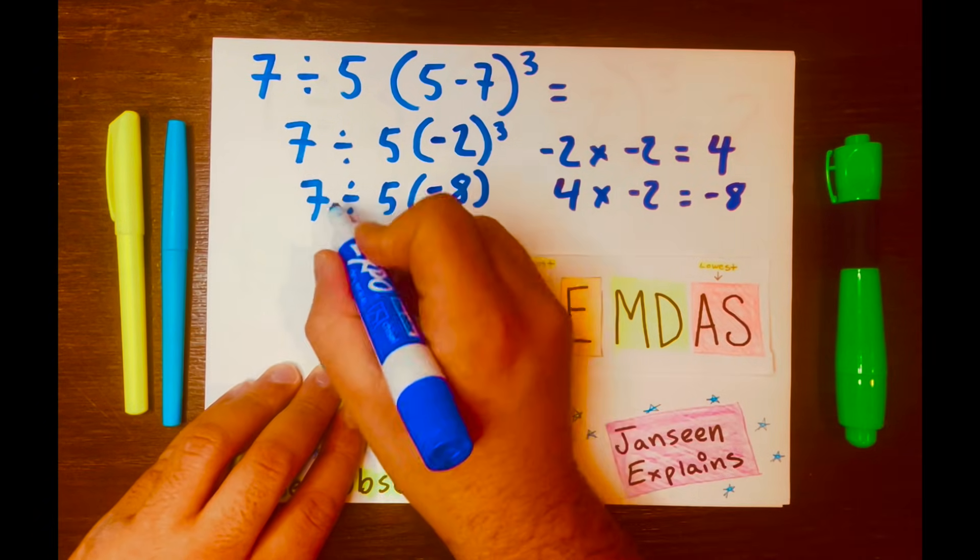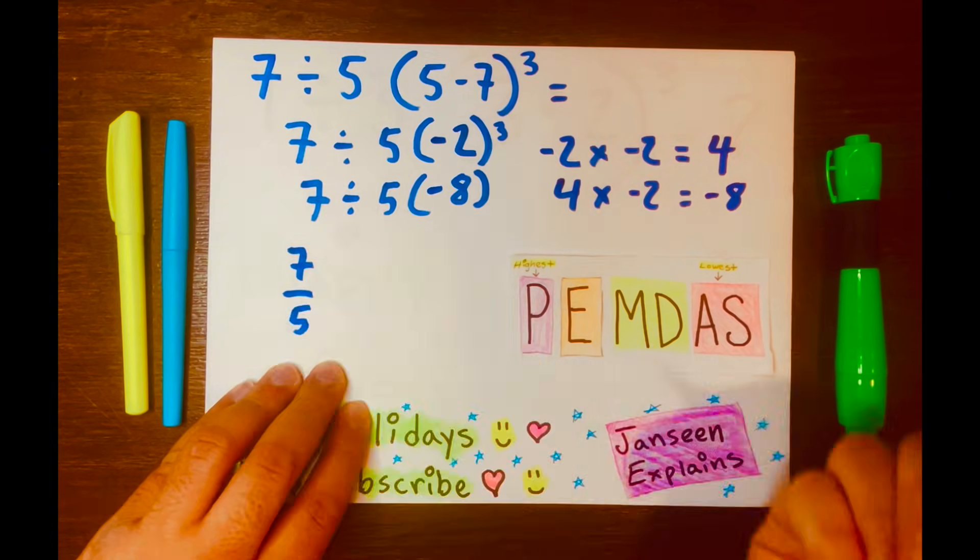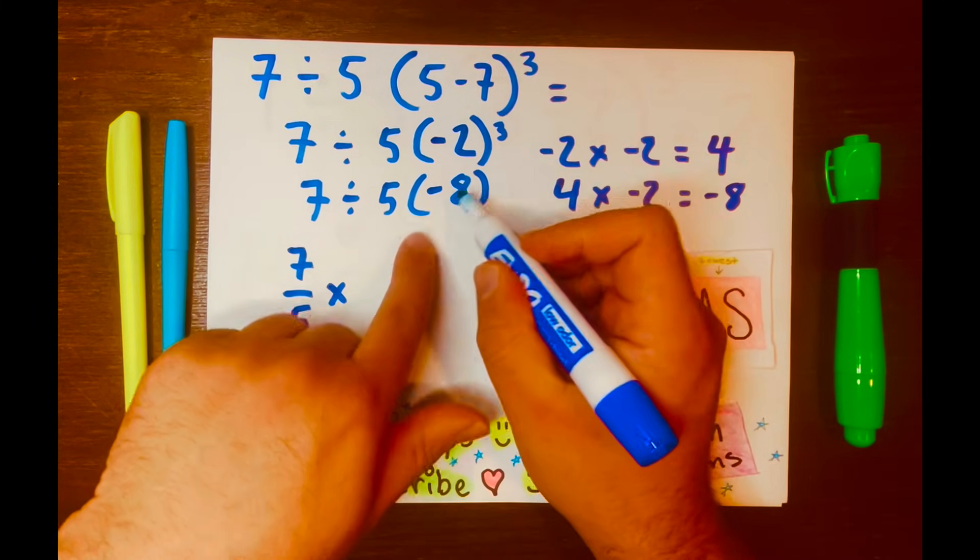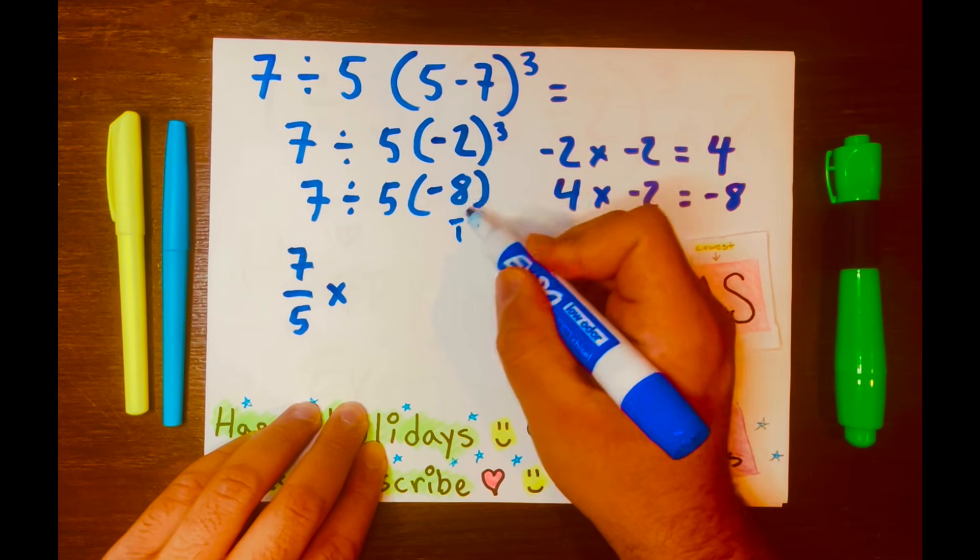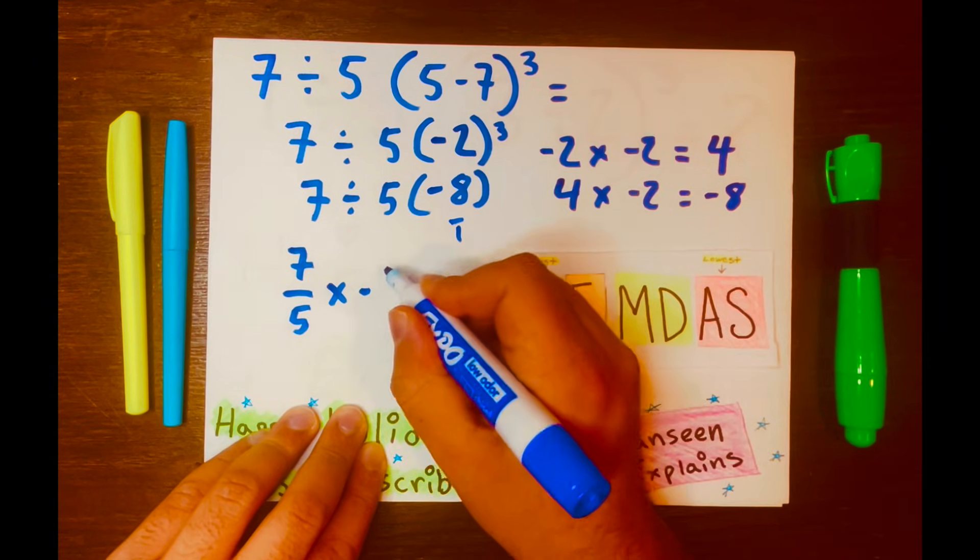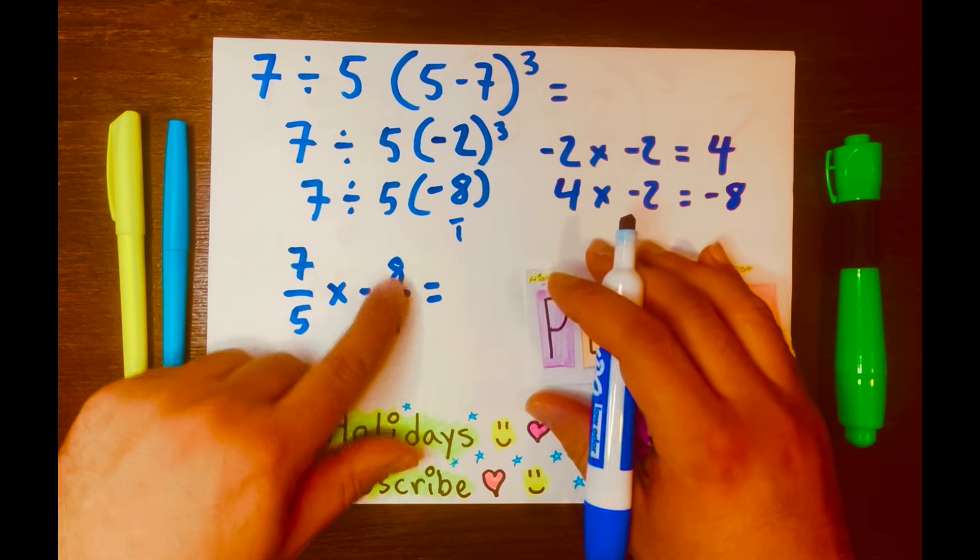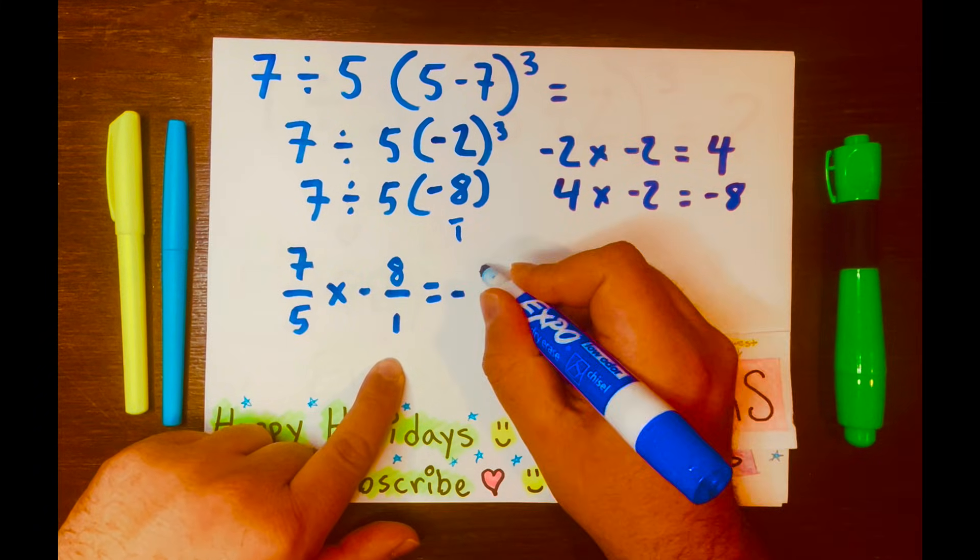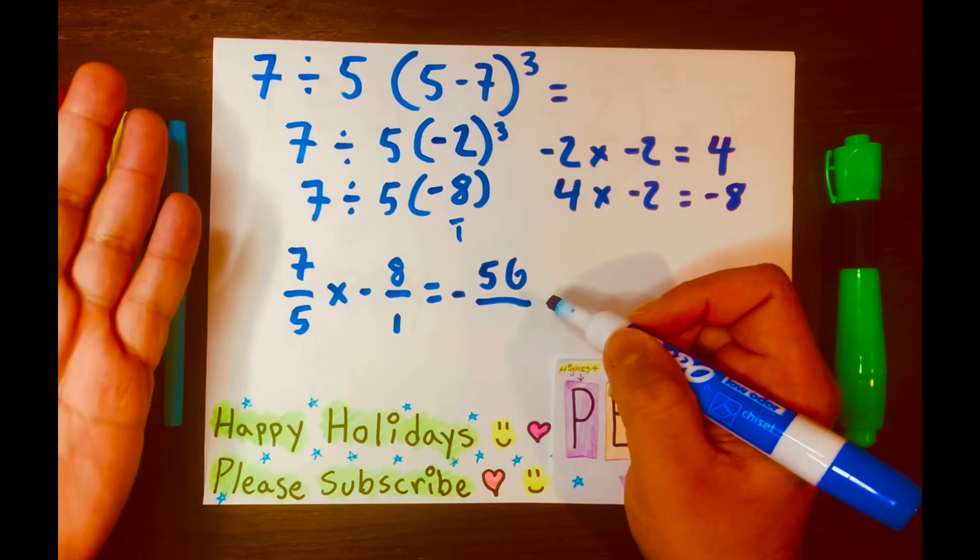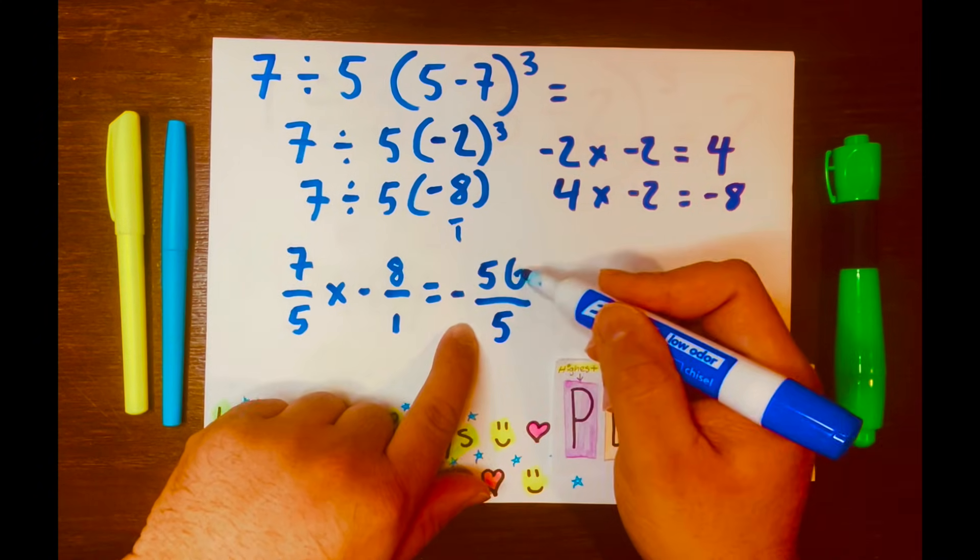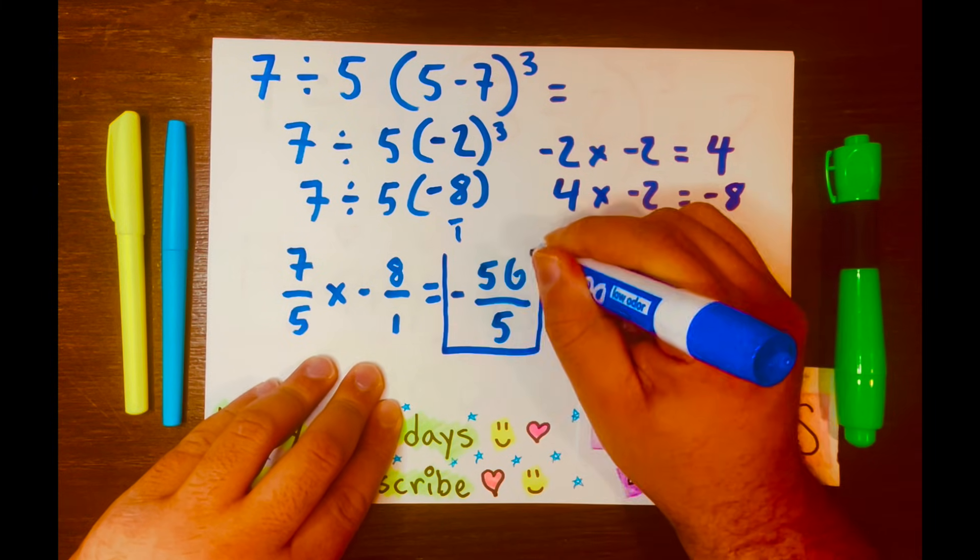Let me write that here. I want to write 7 divided by 5 in a fraction form to make the math easy. So, 7 over 5, and then times, I want to turn this negative 8 to a fraction. We know negative 8 over 1 equals negative 8. So, I'll write negative 8 over 1. And we just multiply across. 7 times 8 equals 56. And negative 56 over 5 cannot be simplified further. So, this will be your improper fraction answer.